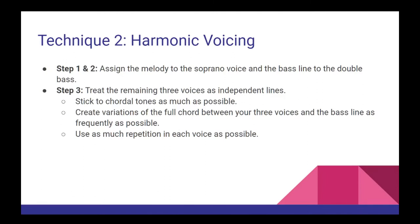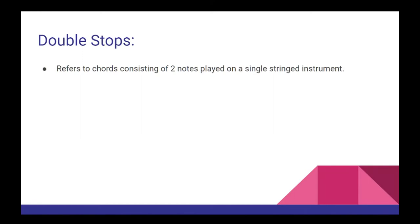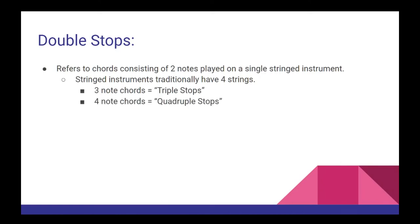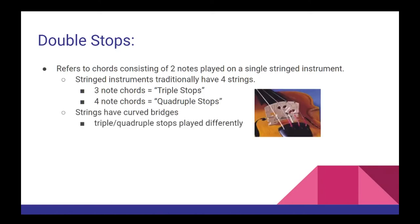Double stops refer to chords consisting of two notes played on a single stringed instrument. Since stringed instruments can produce pitches from each of their four strings, it is possible for them to produce two-note, three-note, or even four-note chords — called triple and quadruple stops respectively. A double stop is performed by playing two notes at the same time. However, given the curved nature of a stringed instrument's bridge, triple and quadruple stops are typically performed as two double stops in quick succession.